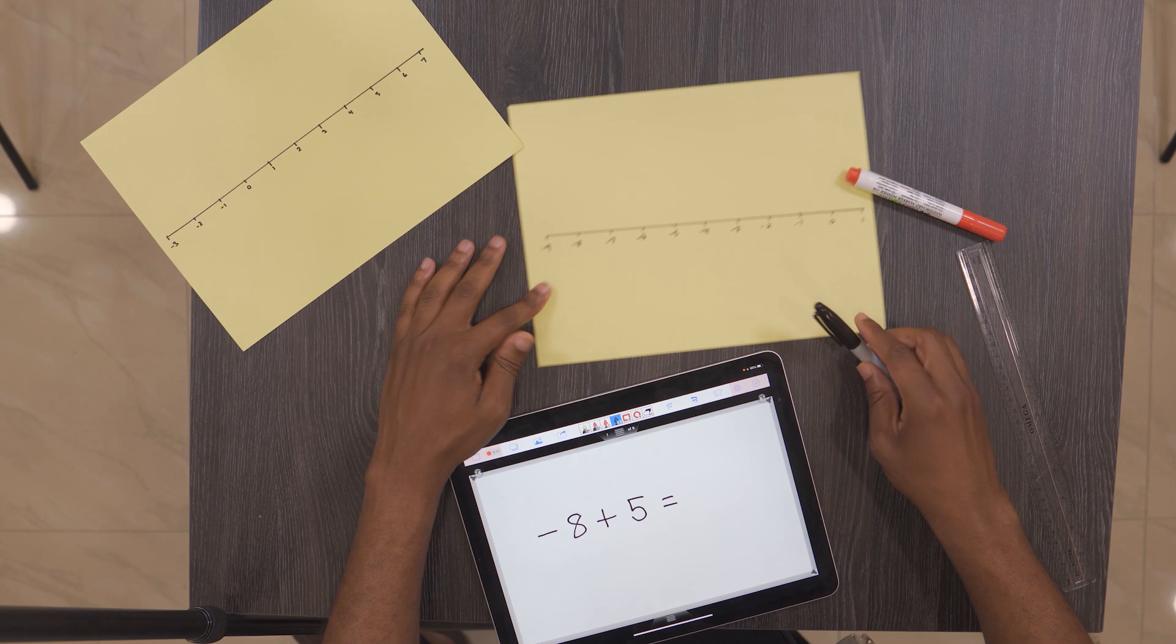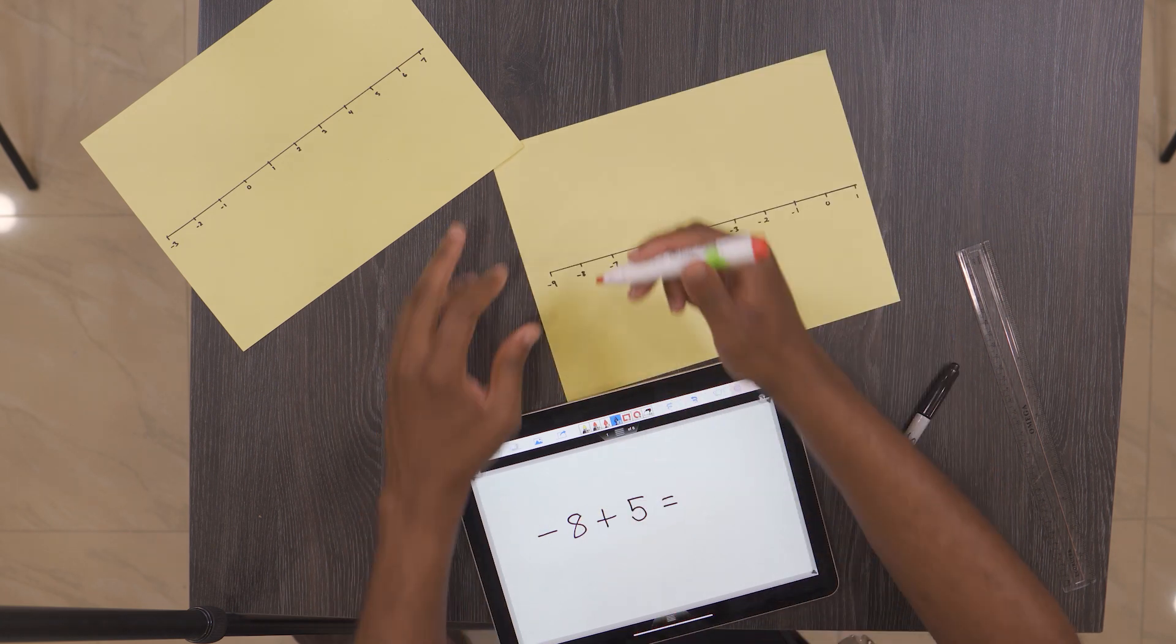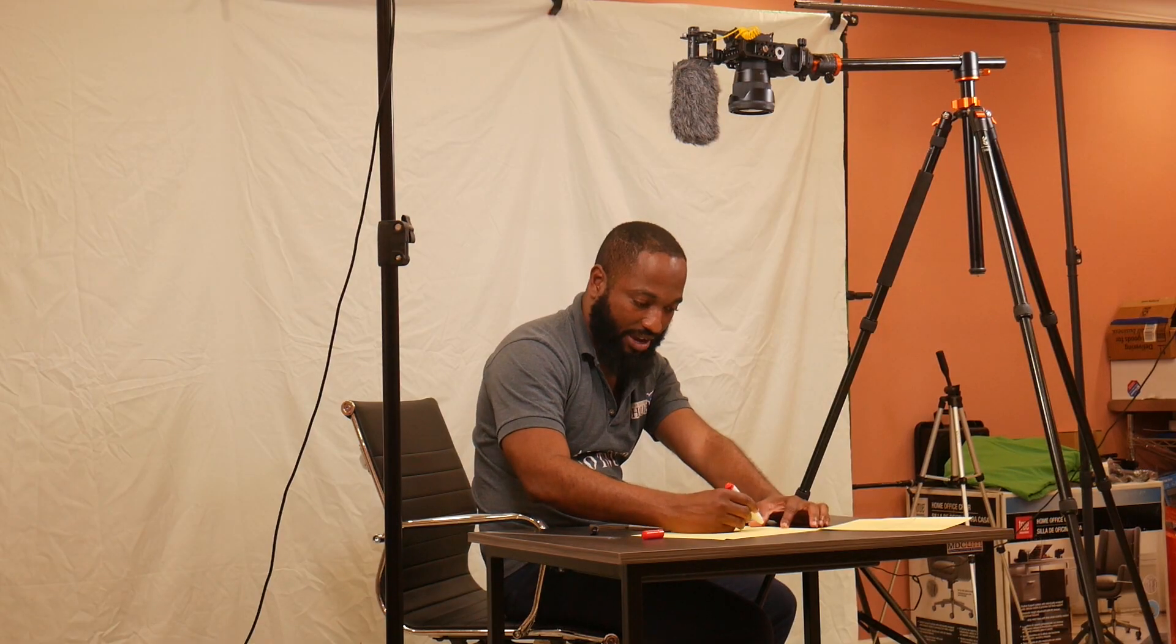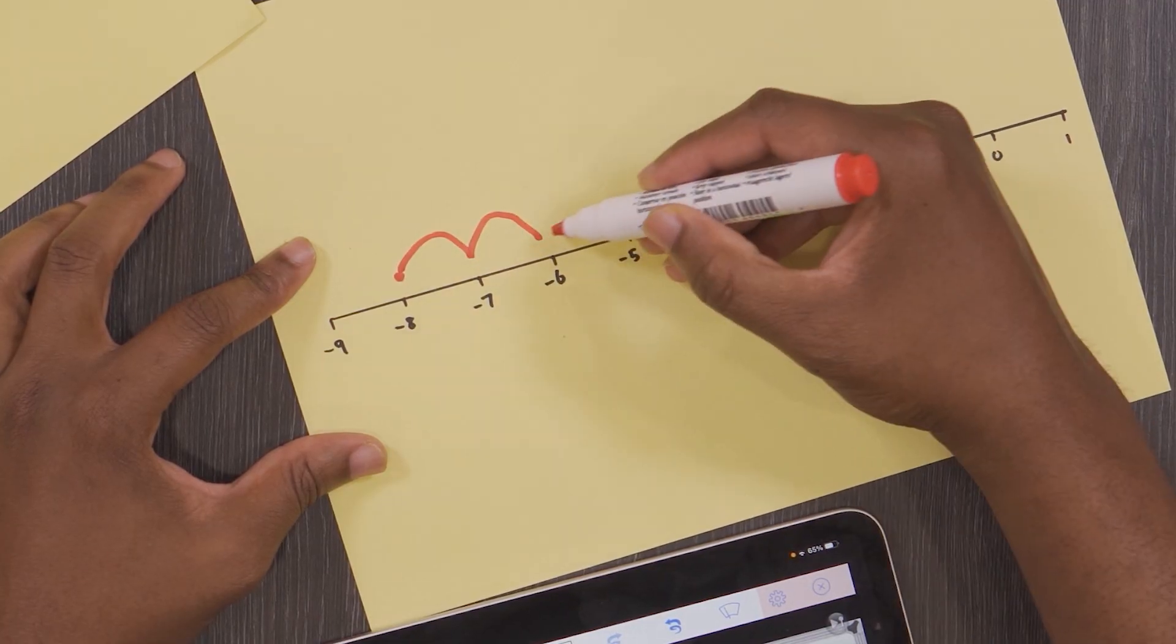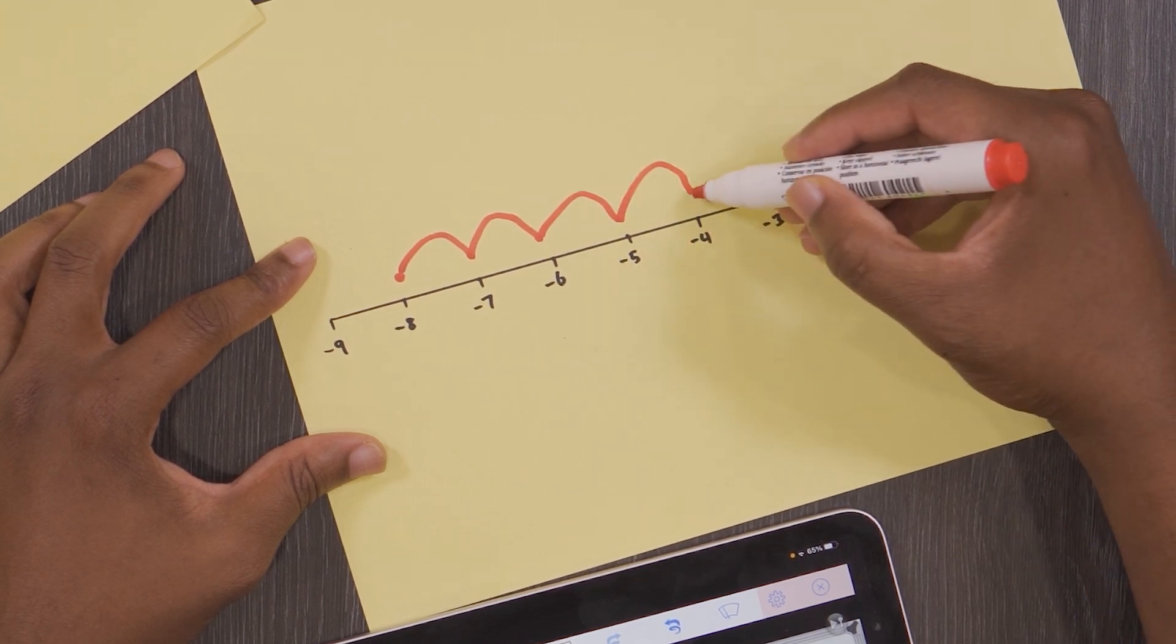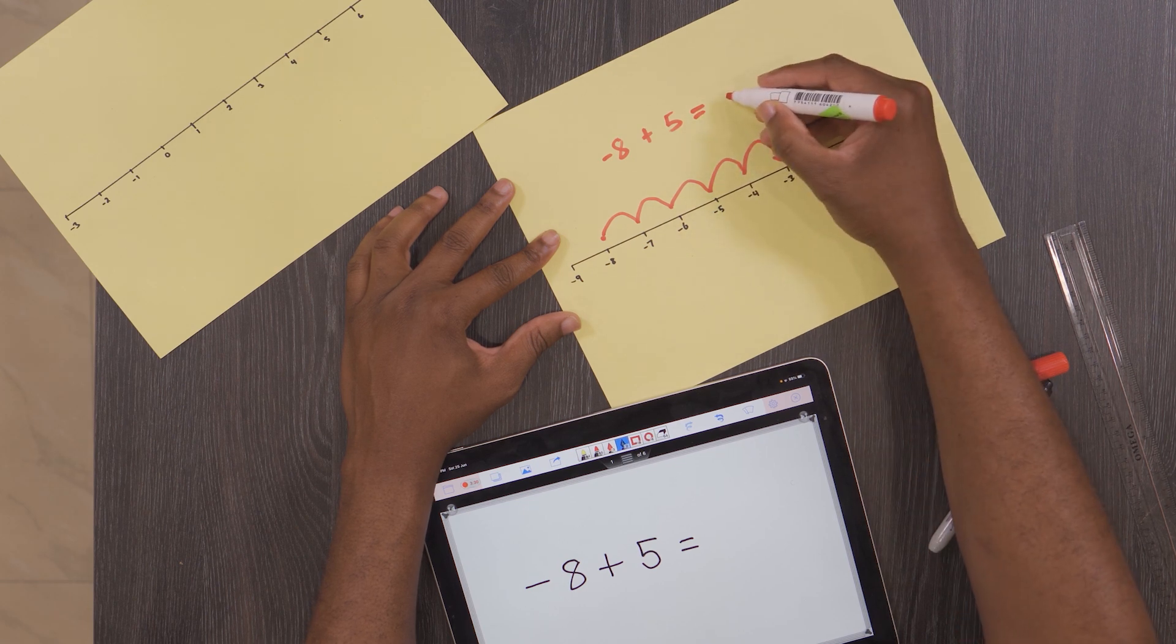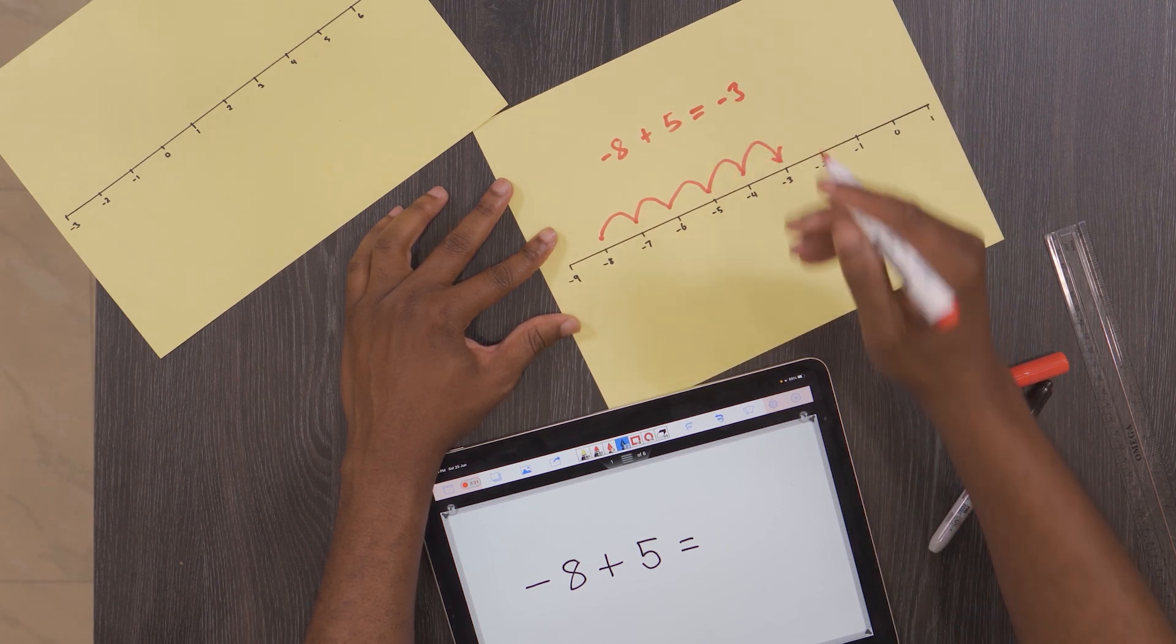in school: we use the first number, negative eight, on a number line. Since we are adding, we go to the right five times: one, two, three, four, five. So the answer to negative eight plus five is actually negative three.